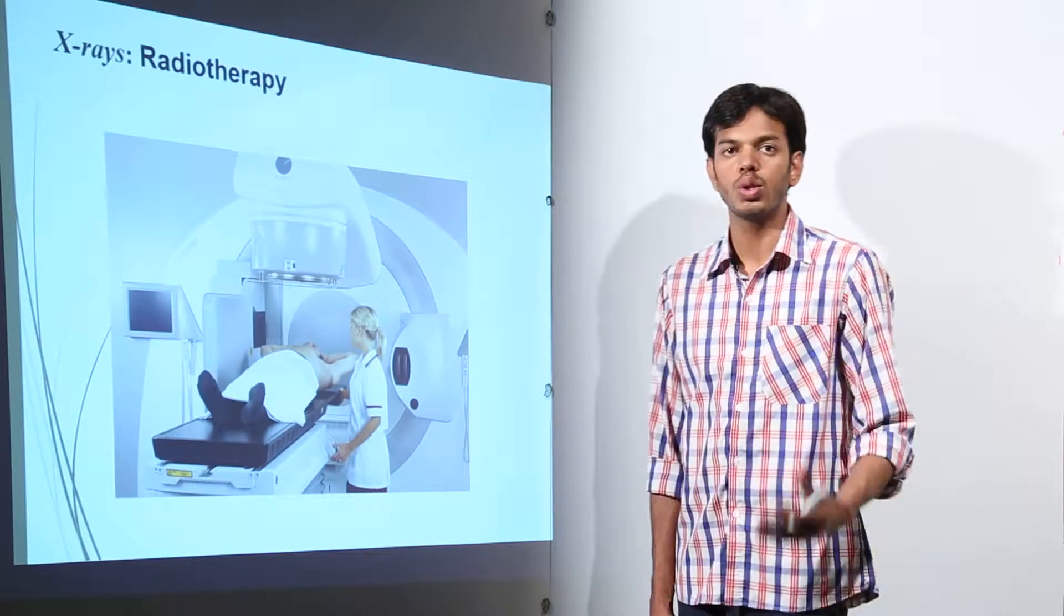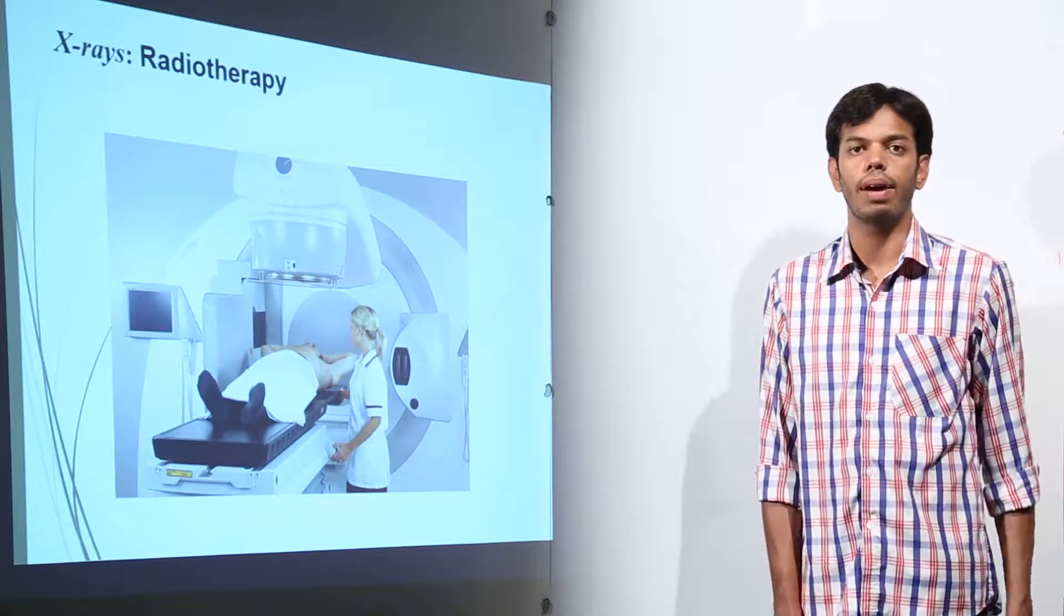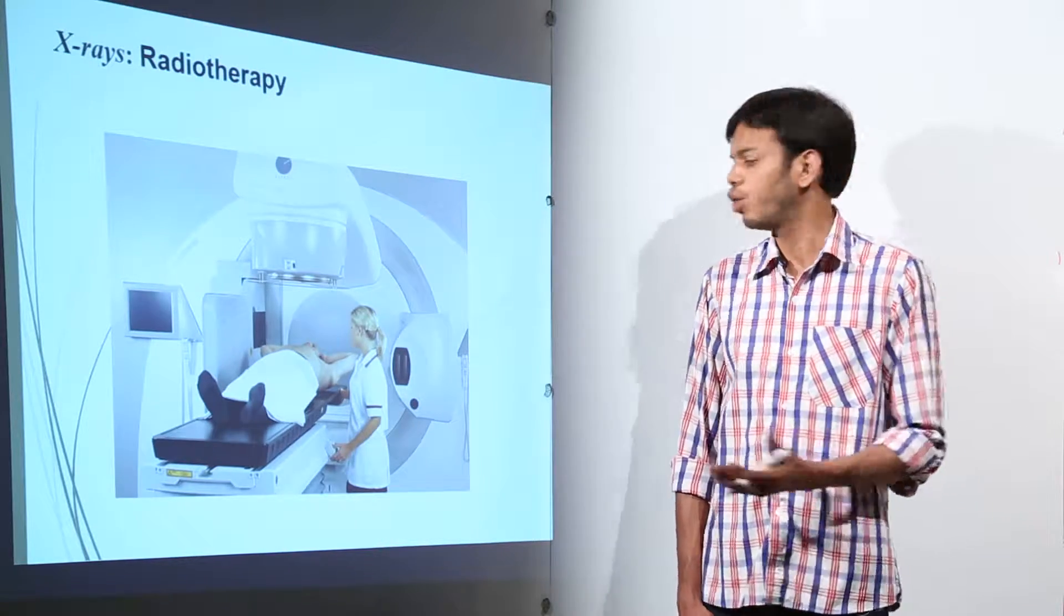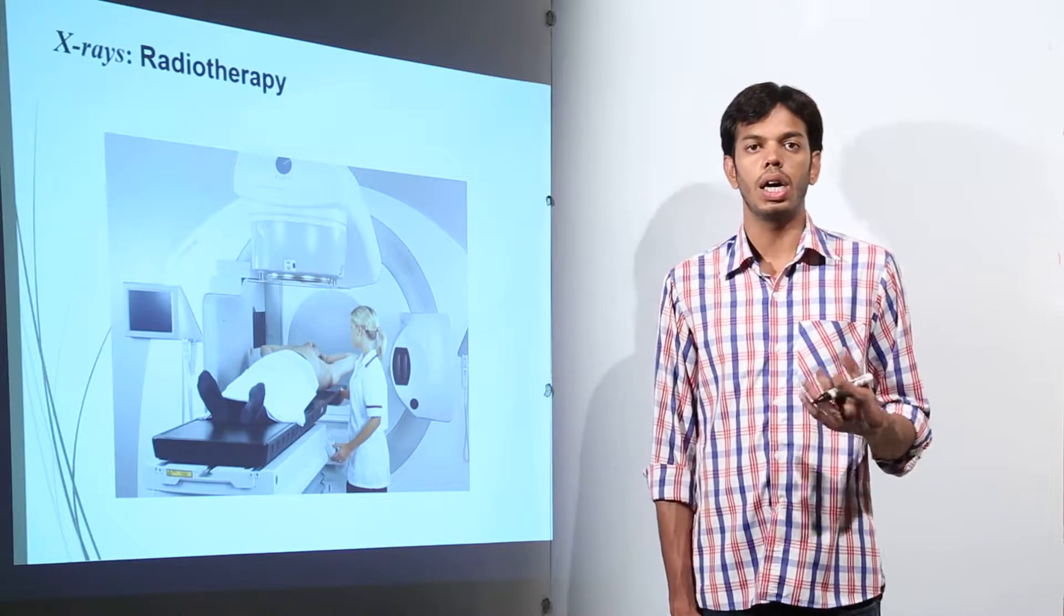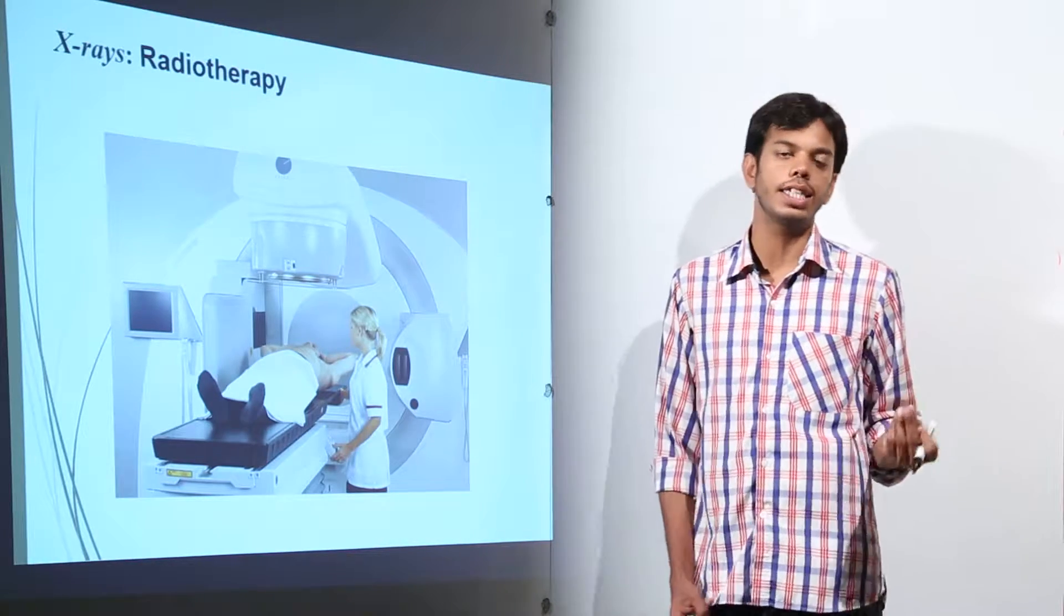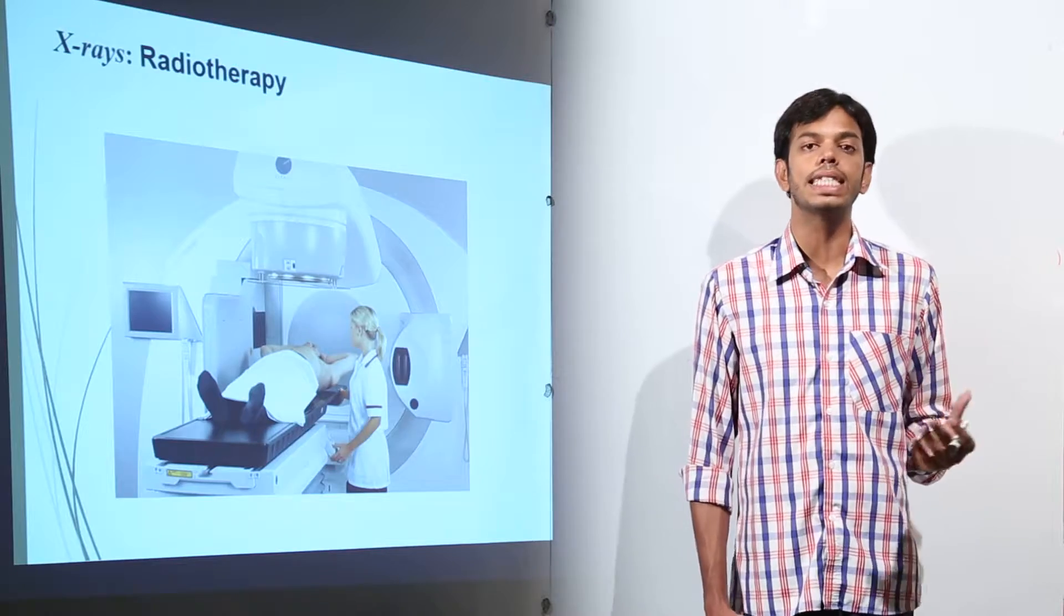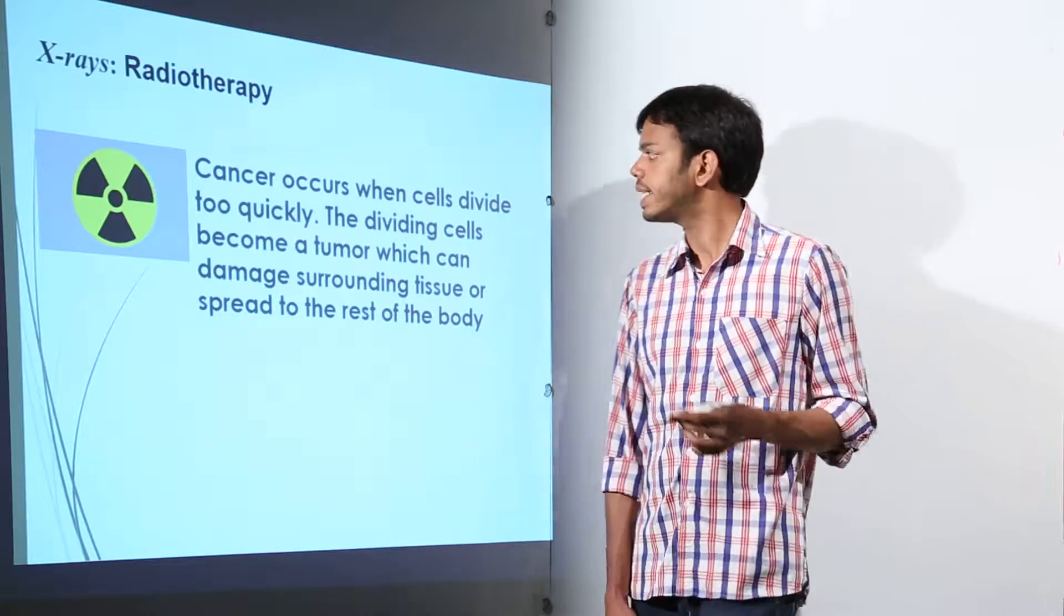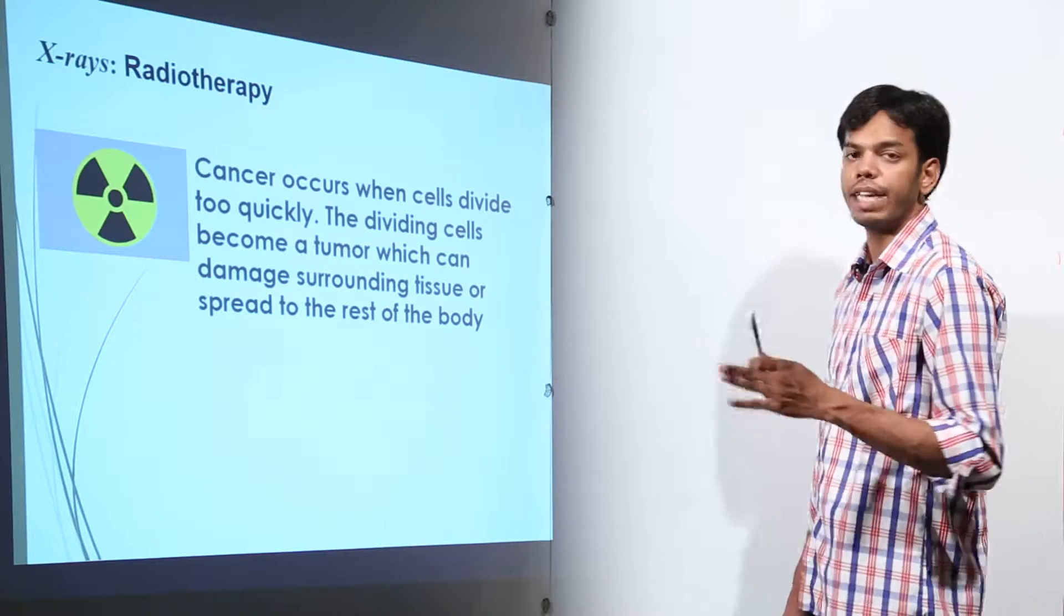Then x-rays and gamma rays, they are used to cure cancers. How? Because when human body is exposed to gamma radiation, very high energy radiation, they kill the cancer cells. How? Cancer cells see, cancer occurs when a cell divides too quickly.